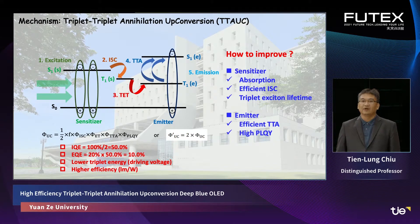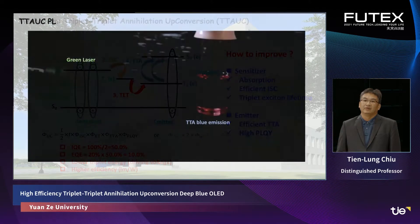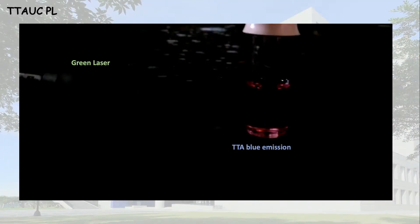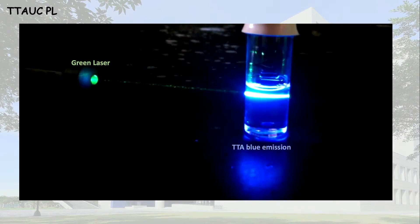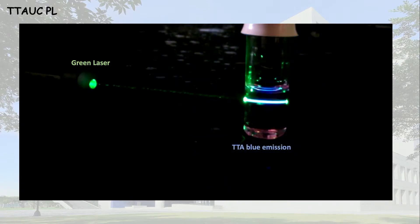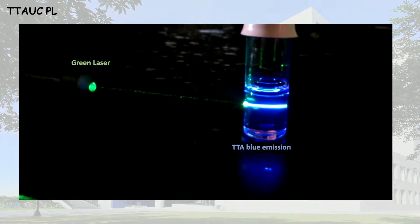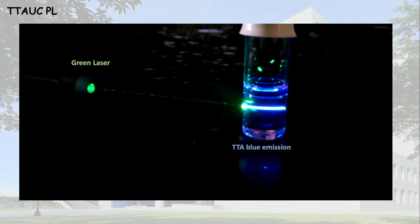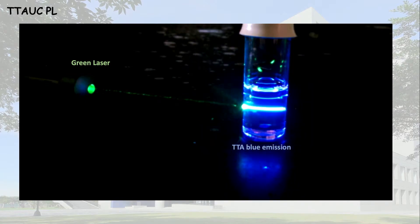To improve this efficiency, we can apply a sensitizer improvement and also emitter improvement. For TTA demonstration, we can use photoluminescence upconversion (PLO) — we use a green laser as input, and then we can observe the TTA blue emission as shown in the video. We observe strong blue emission from the PLO experiment.